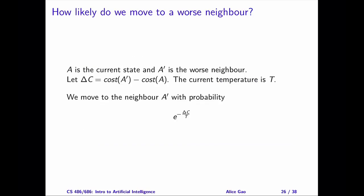How can we determine the probability of moving to a worse neighbor? Let a be the current state, and let a prime be the neighbor that's worse than the current state. Let delta C represent the cost difference between a prime and a.